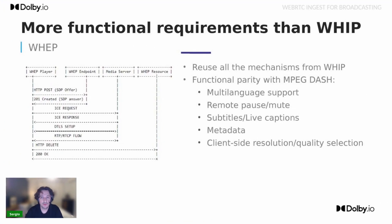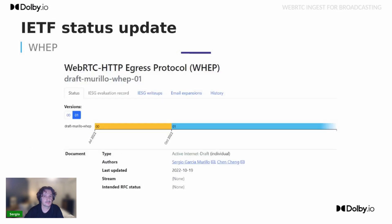At the technical level, WHEP reuses all the mechanics specified in WHIP, so creating an initial version of the specification was really easy. However, WebRTC stream playback has more functional requirements than the ingest side — especially we want functional parity with MPEG-DASH. This includes multi-language support for audio tracks, remote playback control for pausing and muting, subtitle and live captioning, metadata for ad insertion and time codes, and client-side resolution selection. The specification was presented at the IETF meeting last week and will hopefully be adopted by the same working group as WHIP within the next weeks.